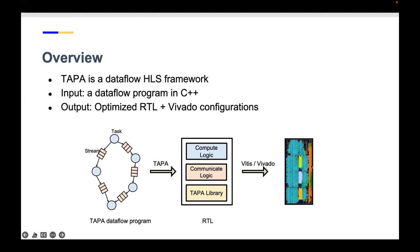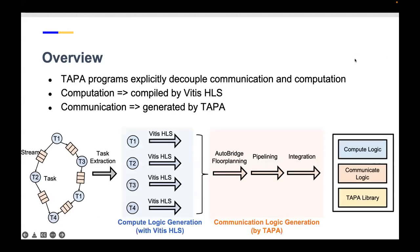We already have many HLS tools, so why do we need yet another one? Compared to existing commercial HLS tools, the most distinctive feature of TAPA is that we explicitly decouple communication and computation. Each parallel-executing task is passed to Vitis for execution—these tasks can be arbitrarily complex, and we rely on robust commercial tools to handle them.